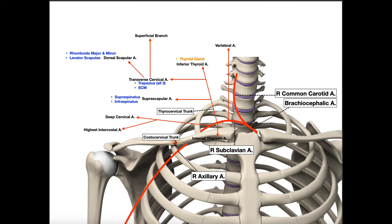The subclavian artery continues laterally, passing underneath the anterior scalene. When it goes posterior to the anterior scalene, that becomes the second part of the subclavian artery. Behind the anterior scalene it gives off the costocervical trunk, which branches into a deep cervical artery and the highest intercostal artery. The internal thoracic artery gives off most of the anterior intercostal arteries, but the first intercostal space is supplied by the highest intercostal artery from the costocervical trunk.